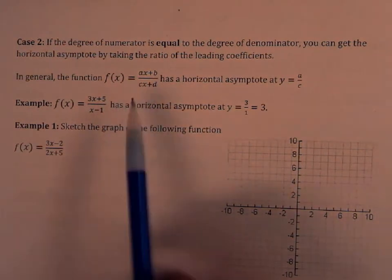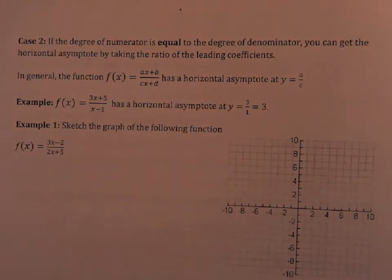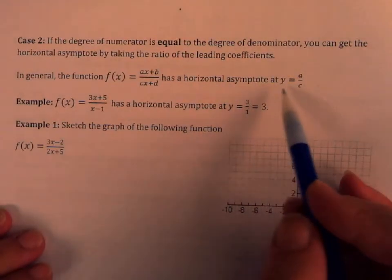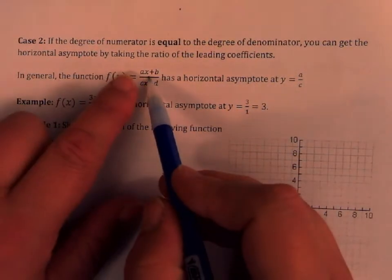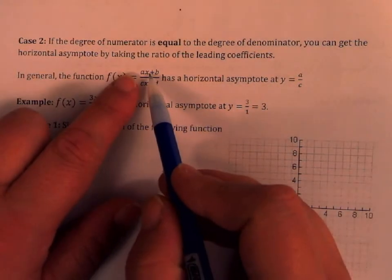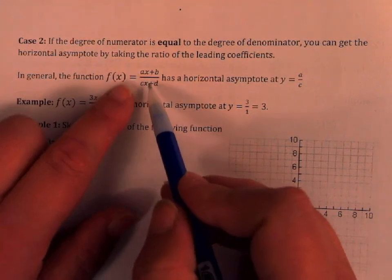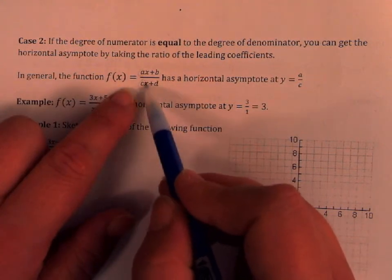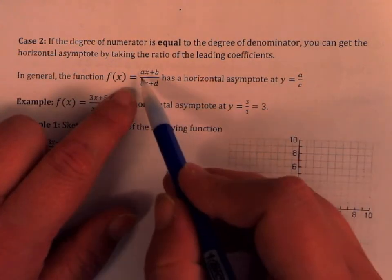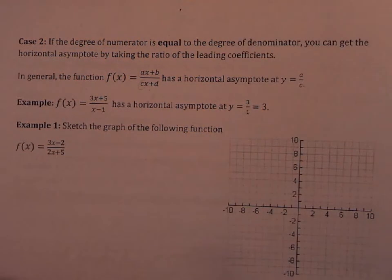If you have a function like ax plus b over cx plus d — degree 1 over degree 1, equal degrees — then you take the ratio of the leading coefficients, a over c, and that gives you the horizontal asymptote.